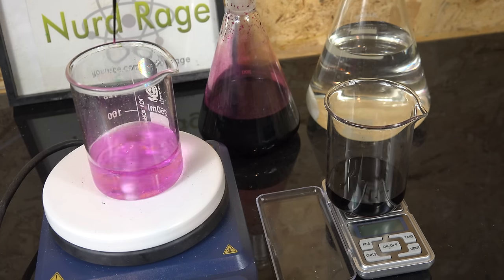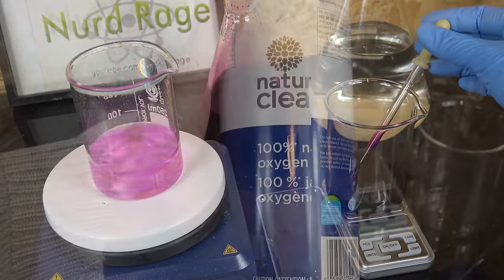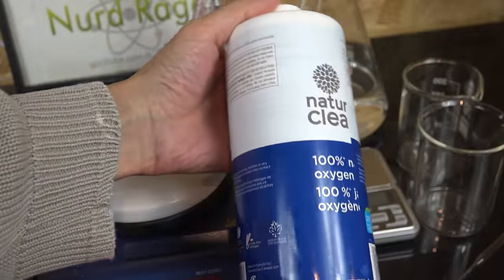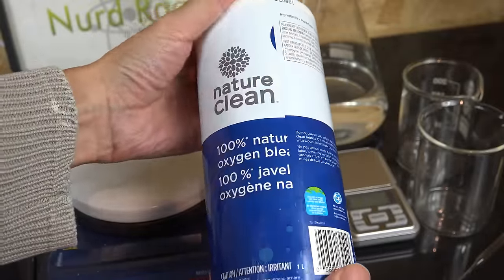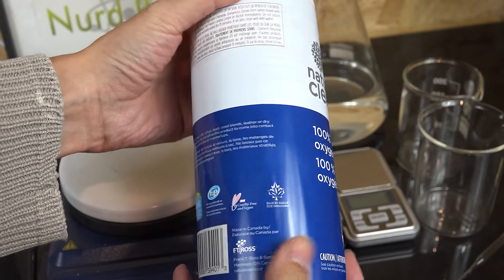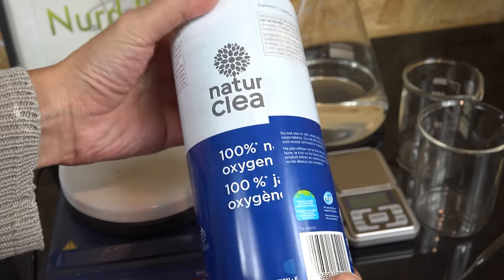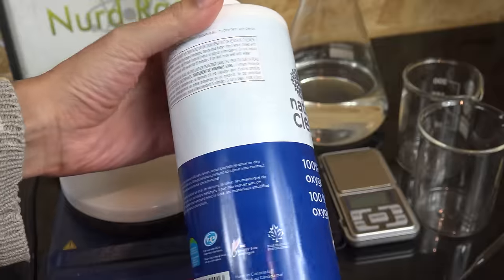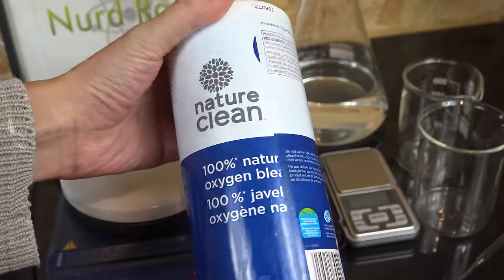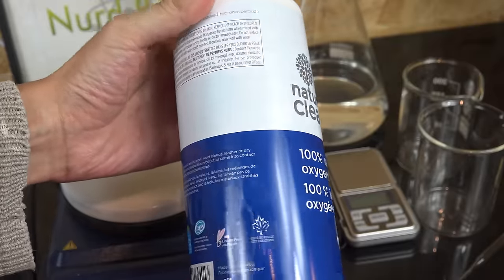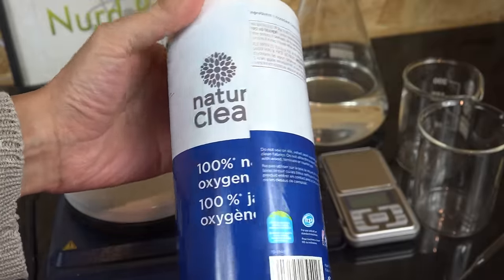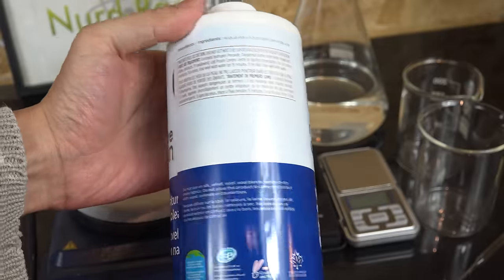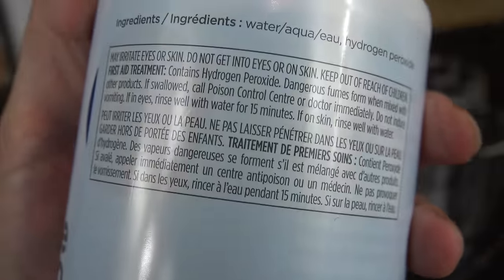But at least you don't have to deal with unruly customers. So I have here a bottle of so-called oxygen bleach. It's actually hydrogen peroxide and is advertised as an eco-friendly alternative to chlorine bleach. For amateur chemists like us, this is a cheap and readily available source of hydrogen peroxide.